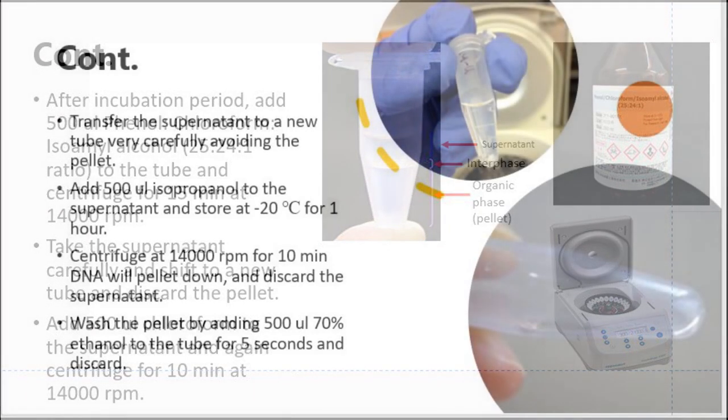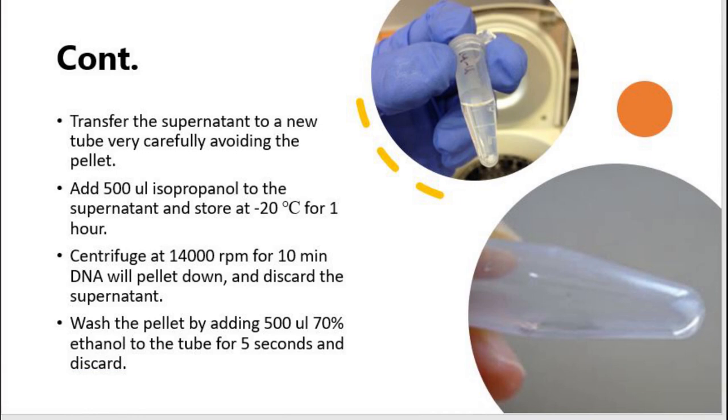Again pick the supernatant very carefully to a new tube and discard the pellet. Add 500 microliter isopropanol to the tube containing supernatant and store it at minus 20 degree Celsius for one hour.